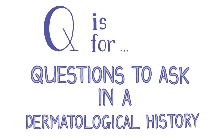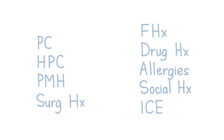Q is for questions to ask in a dermatological history. In a dermatological history we follow the same format as any normal medical history: presenting complaint, history of the presenting complaint, past medical history, surgical history, family history, drug history, allergies, social history, and ICE — that is ideas, concerns and expectations. However, there are a few important questions you would want to ask in a derm history that you may not ask in any other medical history.